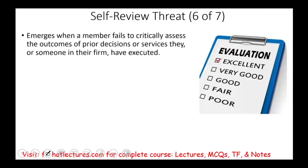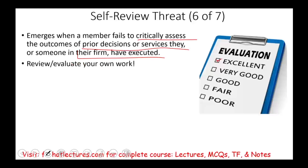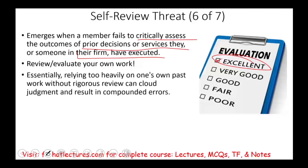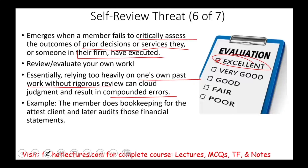Then there's the self-review threat. This occurs when a member fails to critically assess the outcome of a prior decision or services they or someone in their firm has executed. You are auditing either your own work or the work someone at your firm performed for the client. What happens is you assume the work must be good, so you overlook issues and give them an excellent grade without being critical. Essentially, you're relying heavily on your own past work without rigorously reviewing it — this could cloud your judgment and result in compounded errors. For example, the member does bookkeeping for the client and then audits the financial statements. That's a self-review threat.